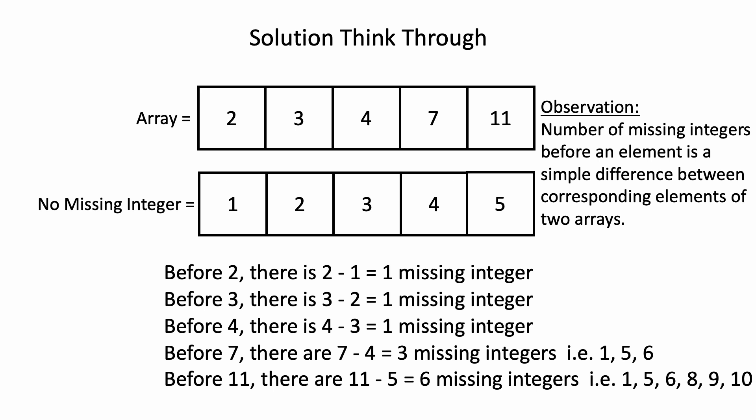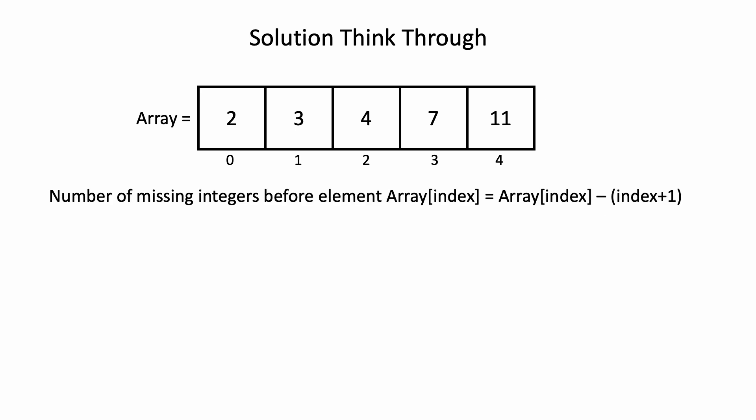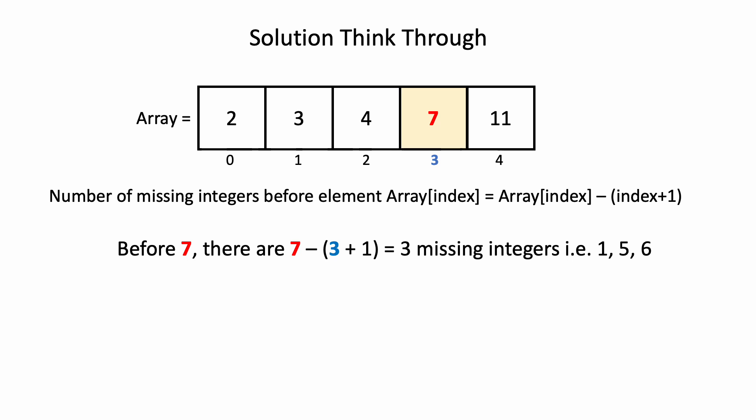Let's formulate the missing integers information from the indices of the input array so that we don't need to maintain the no-missing-integer array. The indices of the input array and the no-missing-integer array values differ by 1. We can formulate: number of missing integers before element at array[index] equals array[index] minus (index + 1). For example, at index 3 where the element is 7, there will be 3 missing integers, matching this formula.